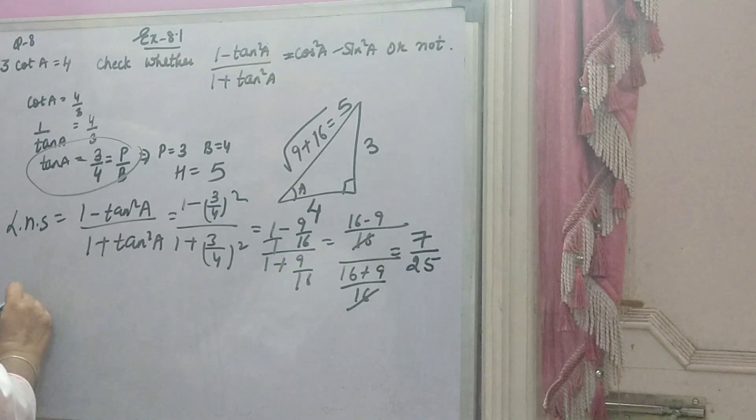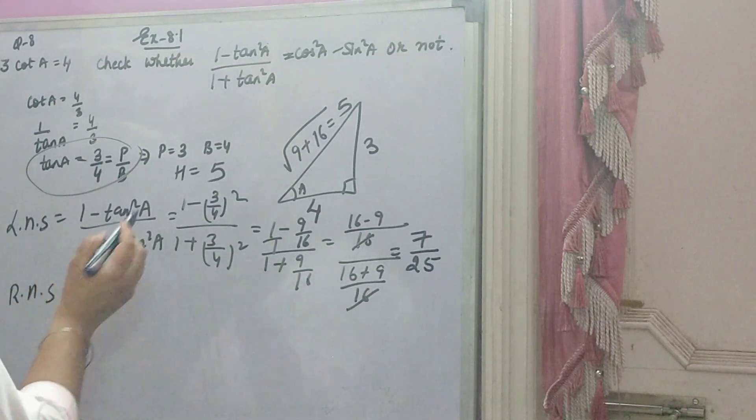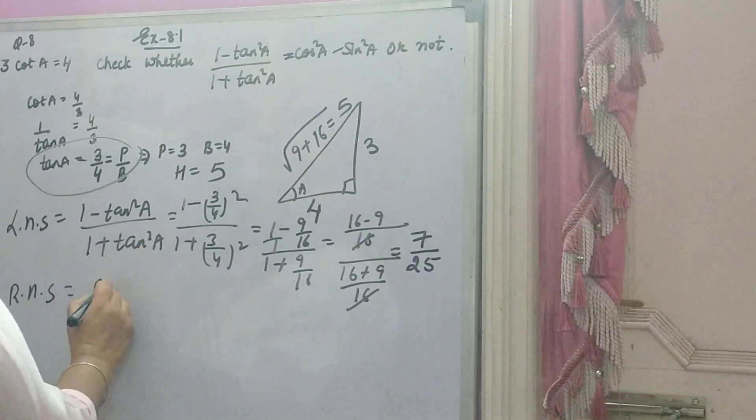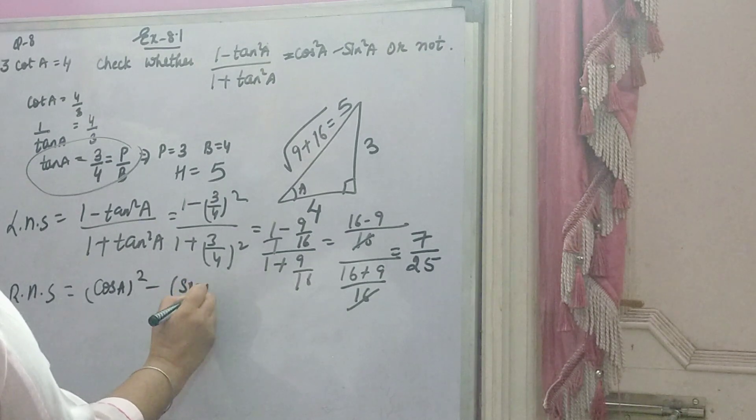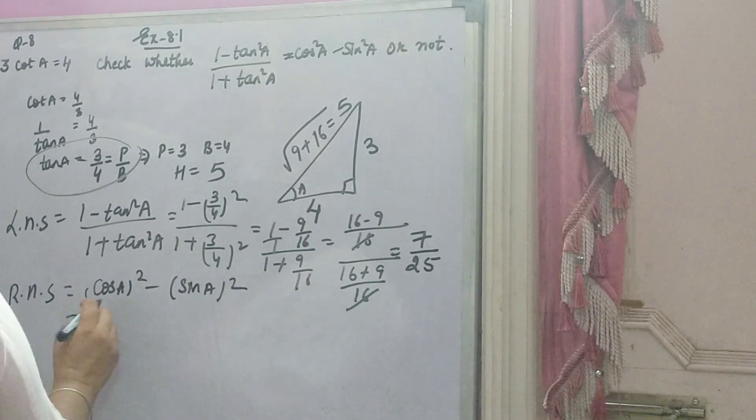Ab, right hand side dekho. Right hand side hai cos²A minus sin²A. Means, cos A ka square minus sin A ka square.